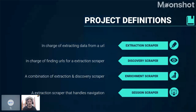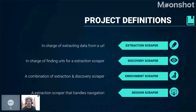A discovery scraper is in charge of finding URLs for another scraper — these are middle-step scrapers used in pipelines. We also defined an enrichment scraper, which is a more complex type combining both instruction and discovery scrapers, able to find URLs and extract data simultaneously. Finally, a session scraper handles navigation, though navigation turns out to be a problem when running scrapers.